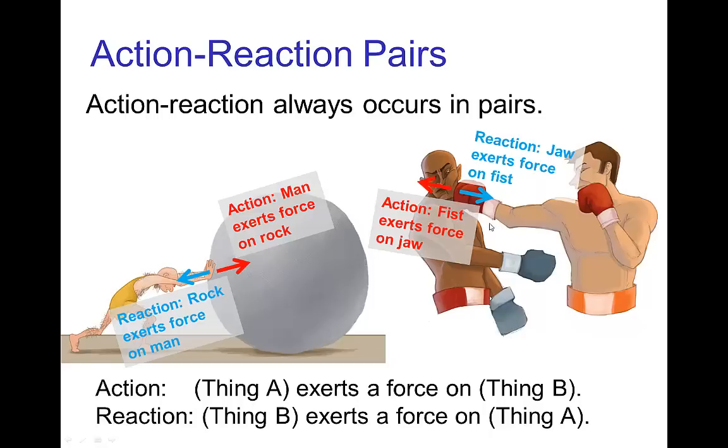In this example, if we think of the fist of the boxer exerting a force on the jaw, if that's the action then there is a reaction which is a force exerted by the jaw on the fist. We always have this type of pairing of action and reaction forces.